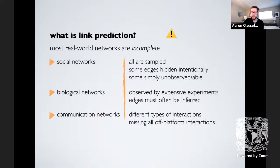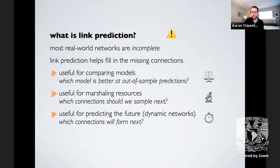In communication networks, you have different types of interactions — mobile phone contacts, email contacts, etc. If you get all the email in the world, you might have a large fraction of communication interactions, but you'll be missing all the mobile phone interactions. By focusing only on one type of connection, you're missing connections of other types. As a result of real-world networks being incomplete, we may want to try to fill in some of the details.